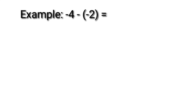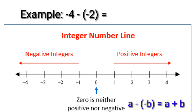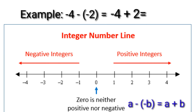Another example: negative 4 minus negative 2 equals? Again, let us use the integer number line to easily subtract the integers. It is a rule in subtracting integers that a minus negative b equals a plus b. Therefore, negative 4 minus negative 2 equals negative 4 plus 2.